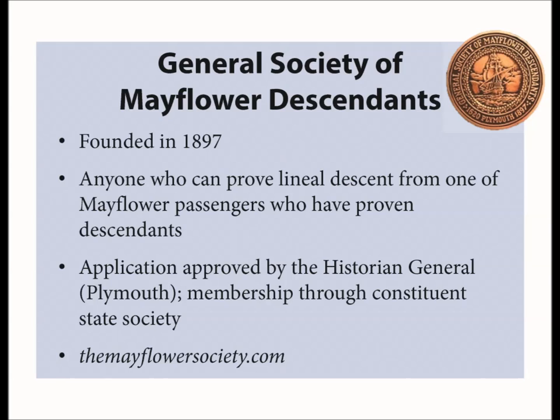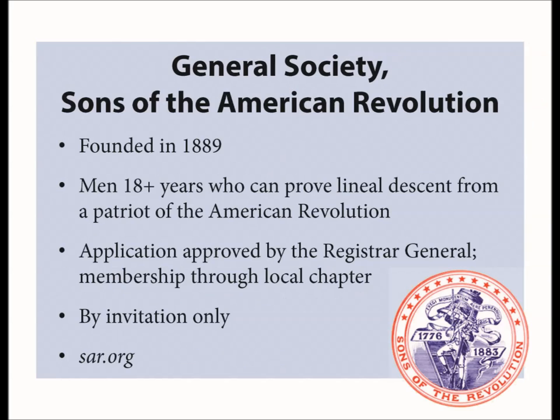Just a note: for the Mayflower Society, you must have proof with an official vital record — a birth, marriage, or death record — for the first three generations, which is you, your parents, and your grandparent. Membership with this society is by invitation only. The General Society of the Sons of the American Revolution was founded in 1889 for men 18 years or older who can prove lineal descent from a patriot of the American Revolution. Eligibility is not limited to military service — men and women who championed the cause of American independence are also considered, including members of the Continental Congress, signers of Oaths of Allegiance, and members of the Boston Tea Party.